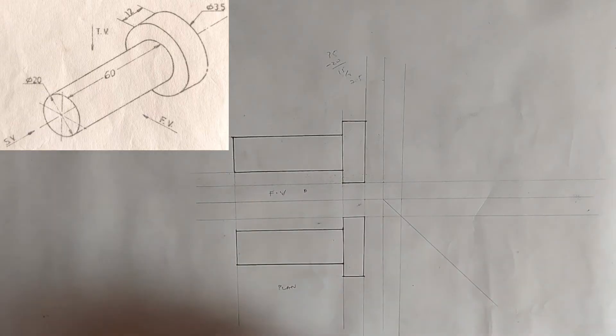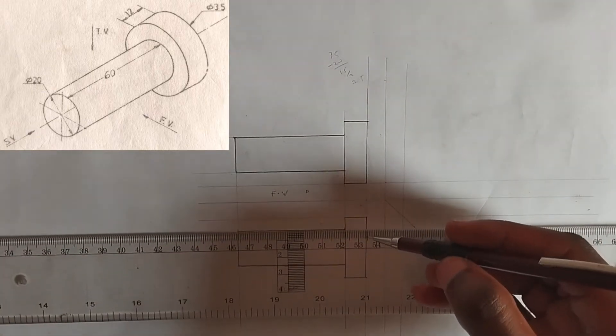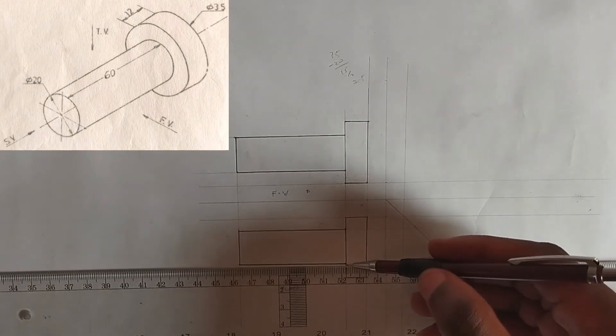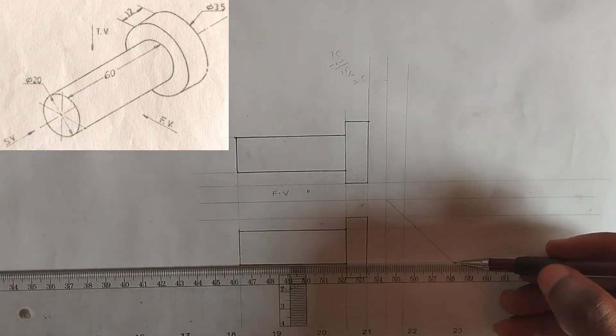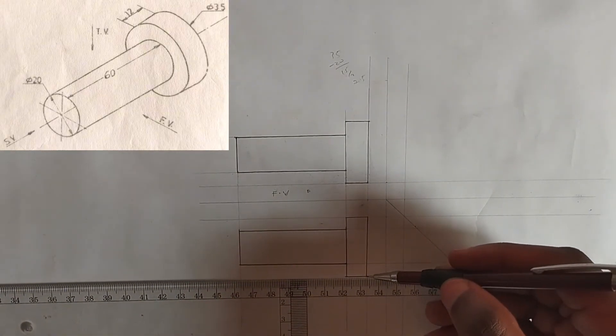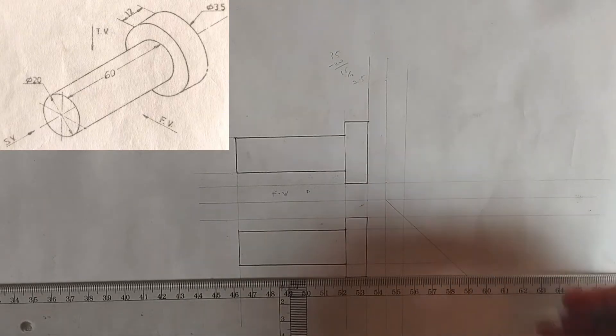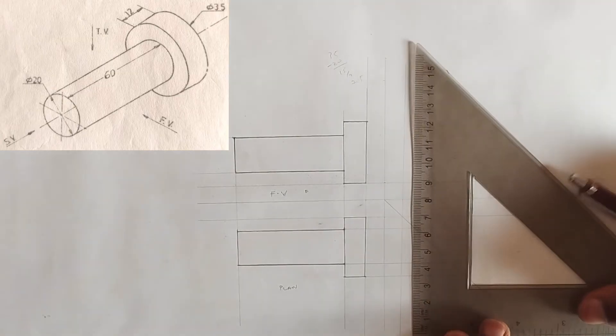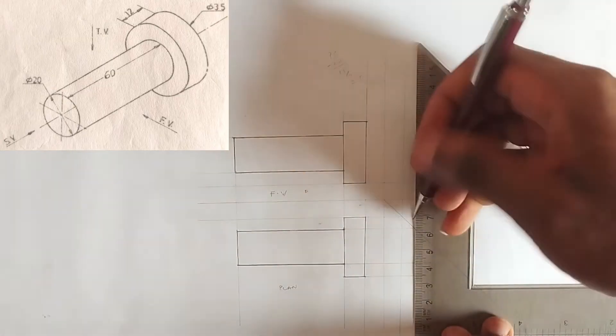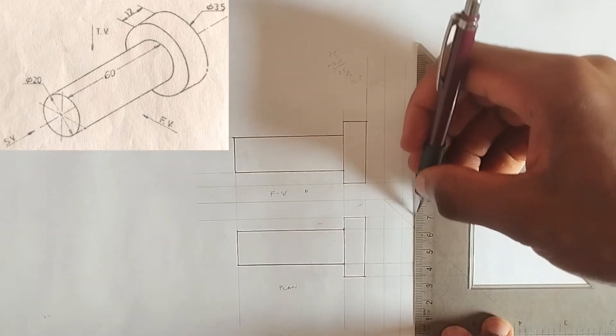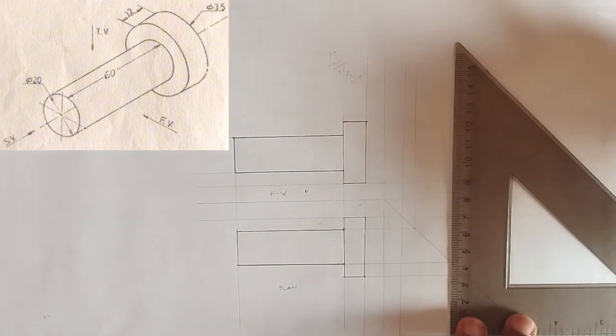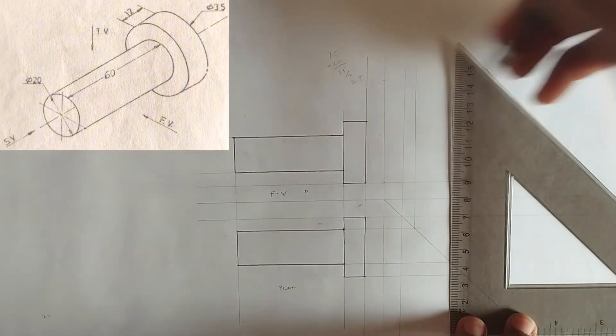Now, project all lines to the angle 45 degree. All lines that are coming from the plan to the angle 45 degree like this. Now I'm going to be projecting them upward. I'm going to project those lines upward like this.